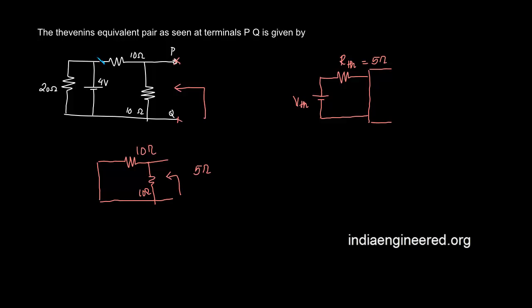We have 4 volts across 10 ohm and 10 ohm and there is no current that is divided that is going into this branch. So we can easily use the voltage division rule.